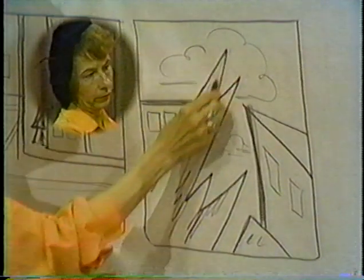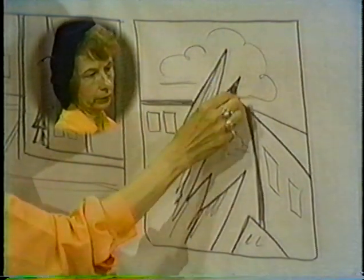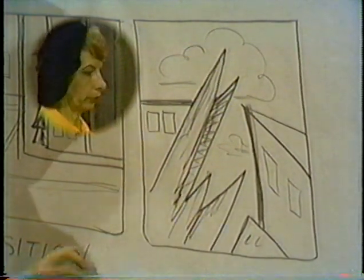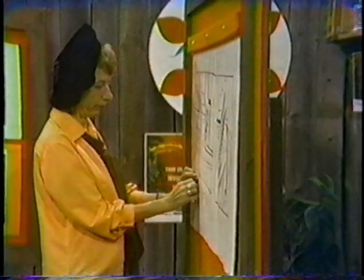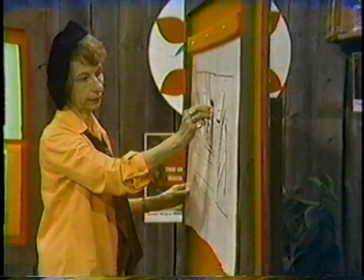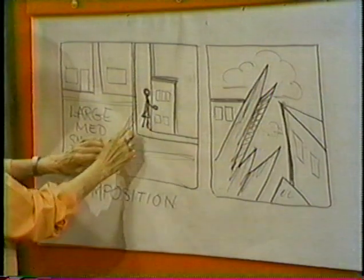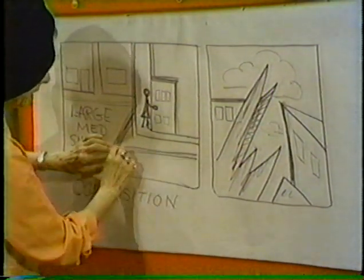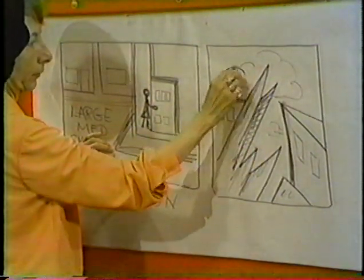What I'm trying to do with this lesson is show you how important it is to have a well-balanced composition underneath all of your pictures. Regardless of what kind of picture you are going to make, you have to first divide up your spaces and get an interesting balance, so that you have large, medium, and small shapes, a balance of diagonal lines, horizontal lines, vertical lines, and curved lines.